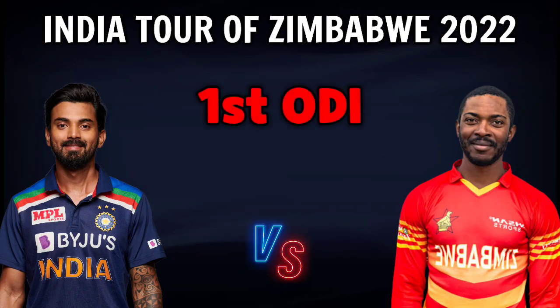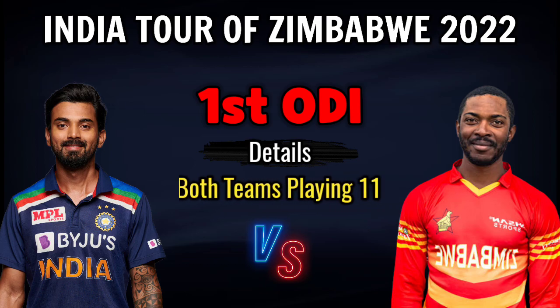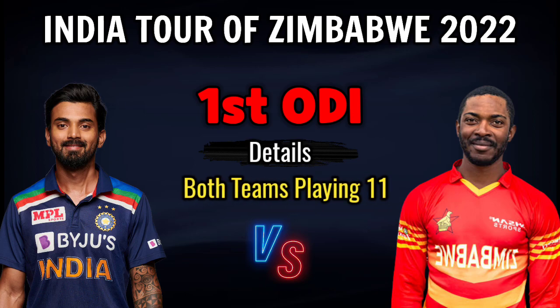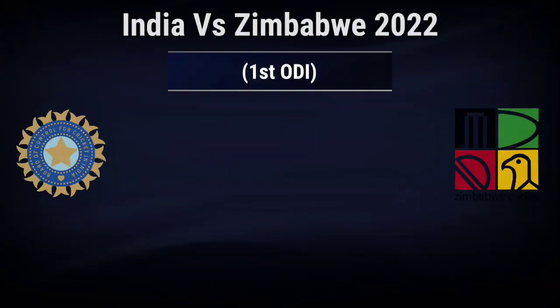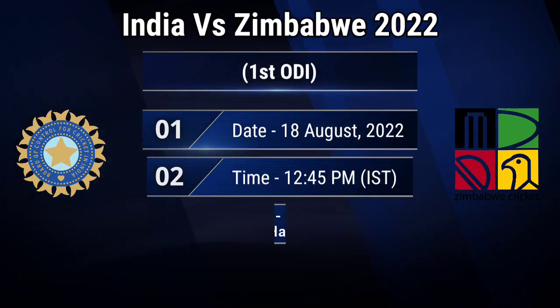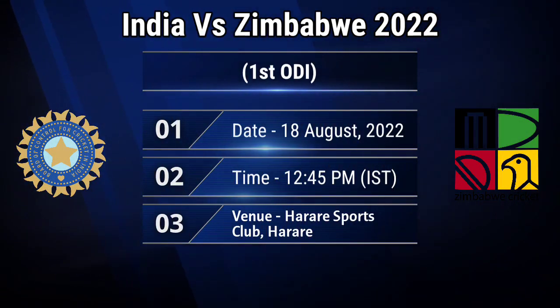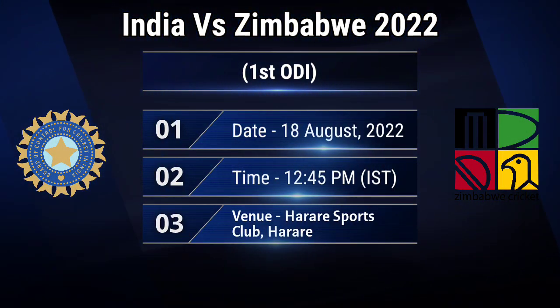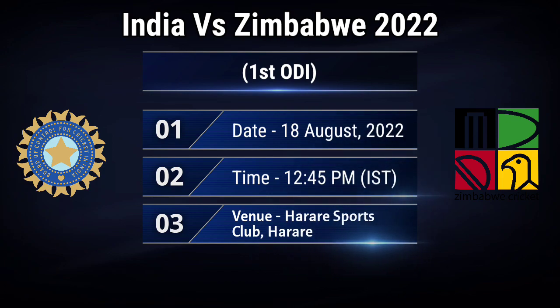India vs. Zimbabwe first ODI match details and both teams playing 11. Date: 18 August 2022. Time: 12:40 PM Indian Standard Time. Venue: Harare Sports Club, Harare.